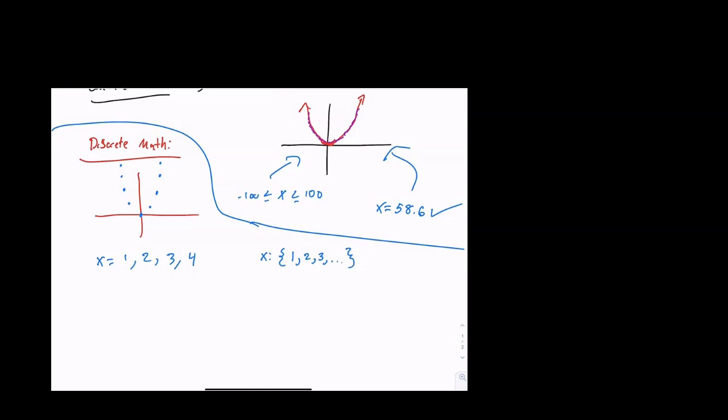So with discrete math, the biggest key factor in discrete math is that the values are all individually separated. We can identify every single value that we are looking at. Whereas in functions, and you've learned in your algebra classes, you can go on to any value. You can talk about big values. You can talk about decimals. You can talk about radical values.